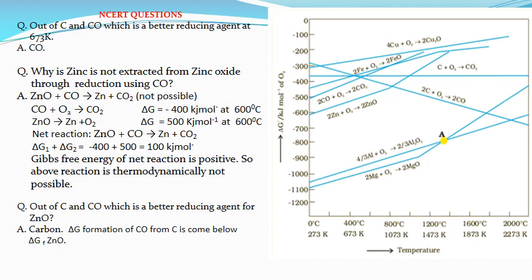Now I will explain some NCERT in-text exercise questions. Question number one: out of carbon and carbon monoxide, which is a better reducing agent at 673 Kelvin? The best reducing agent will undergo oxidation more easily — meaning, which of the two can take oxygen and form an oxide more readily. To find the answer, we can make use of the Ellingham diagram.